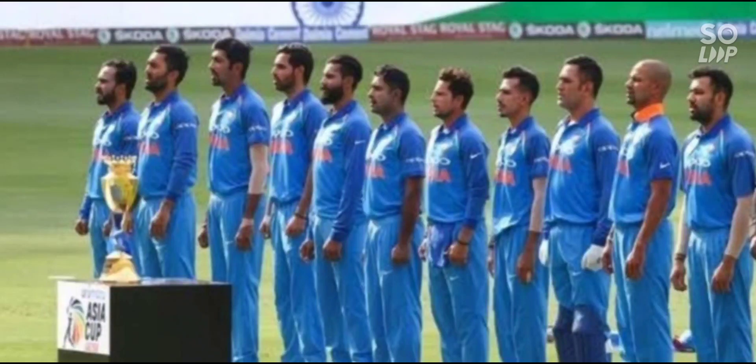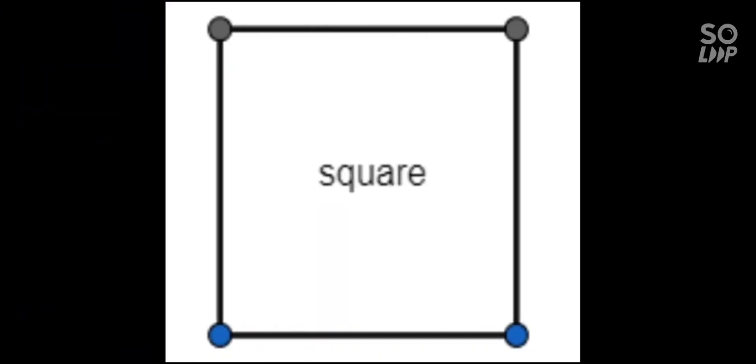This is the Indian Cricket Team, and a cricket team has 11 players. A shape that has 4 equal sides is called a square.